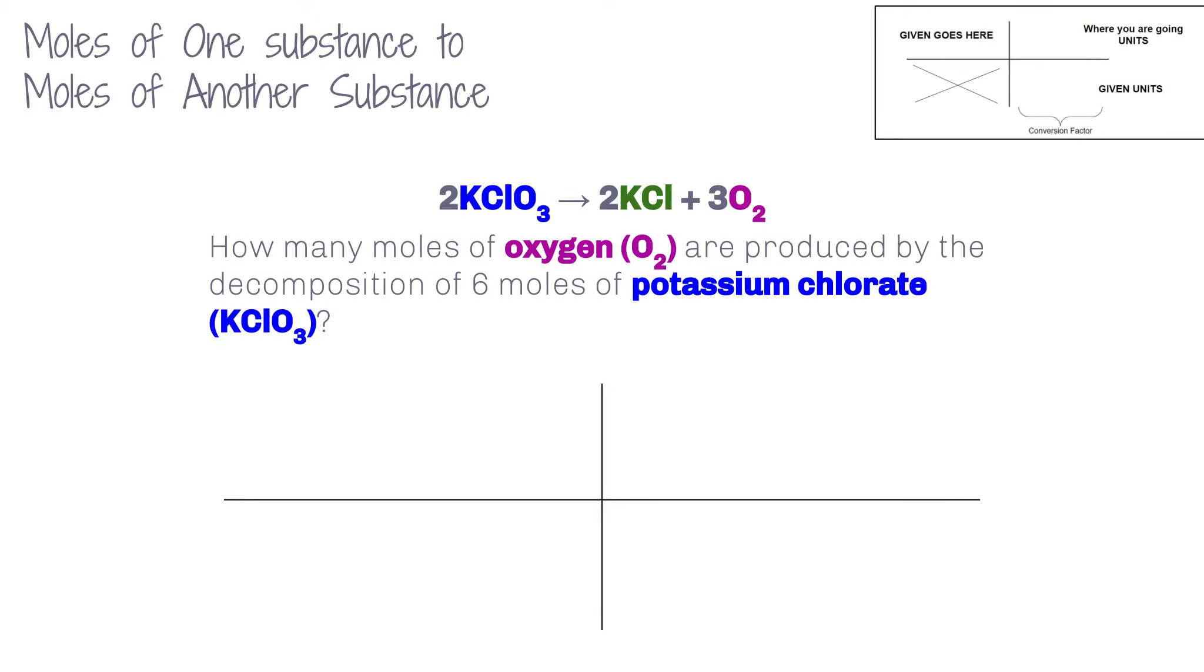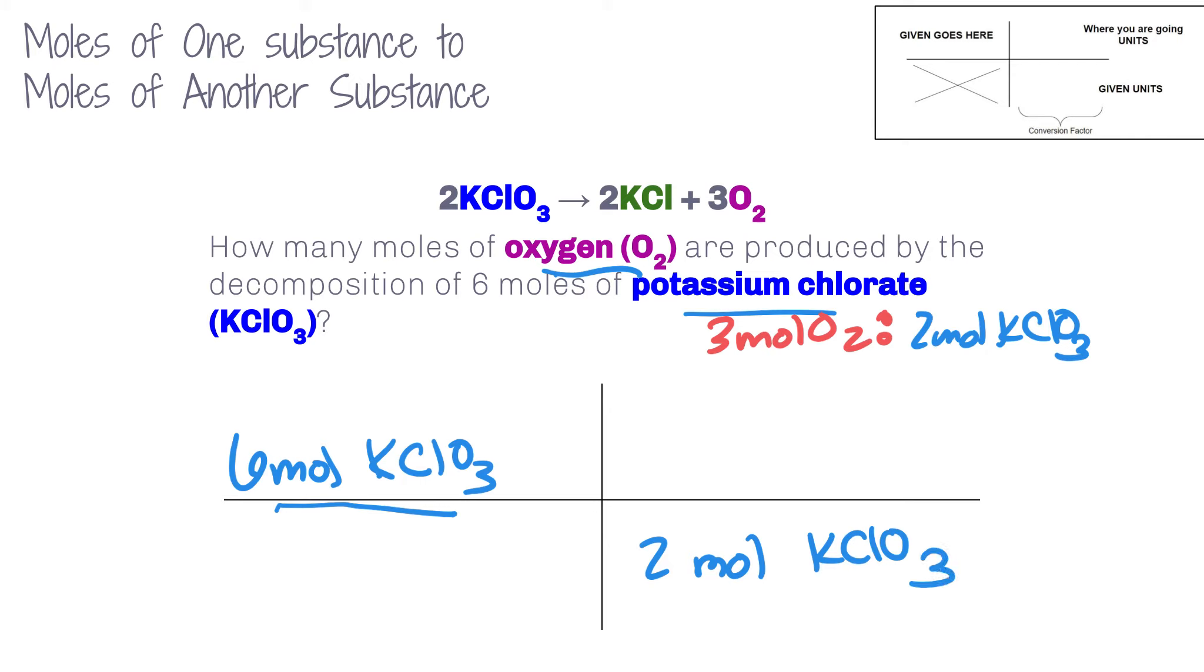So in this question, it says, how many moles of oxygen are produced when the decomposition of 6 moles of potassium chlorate? So in this, we're going to write down what we started with. So we started with 6 mole of KClO3. Now the ratio that we need, we're going to be between oxygen and potassium chlorate. So we have 3 moles O2 to every 2 mole KClO3.